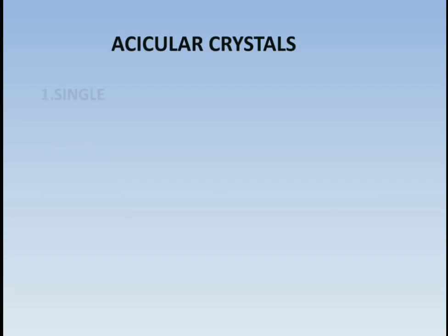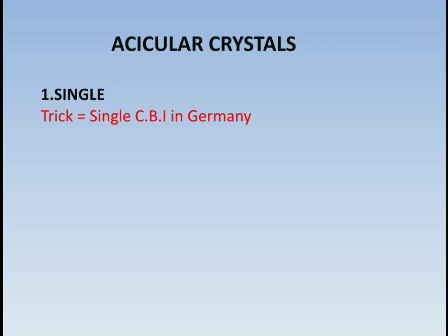Next is acicular crystals. There are two types — the first is single acicular crystals. The trick is 'single CBI in Germany,' meaning single acicular crystals. CB denotes cascara bark, I denotes ipecac, and Germany — GE — denotes gentian.